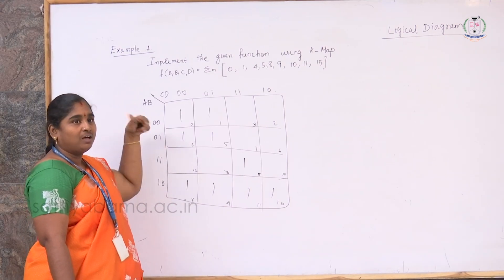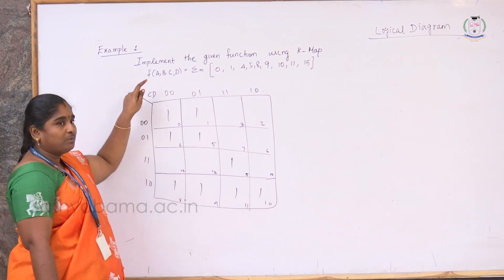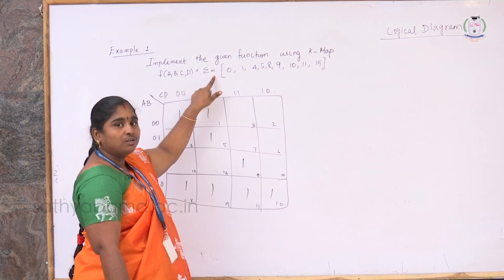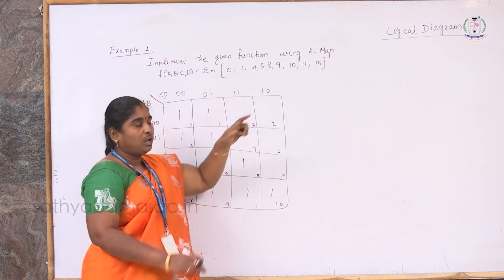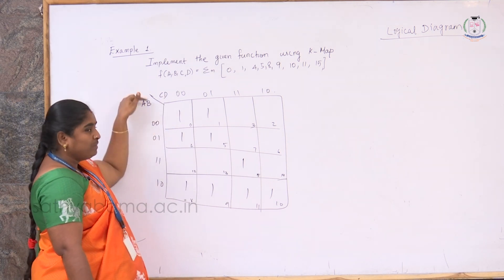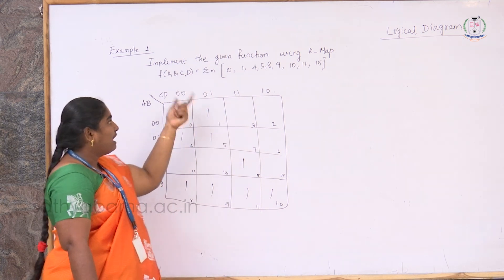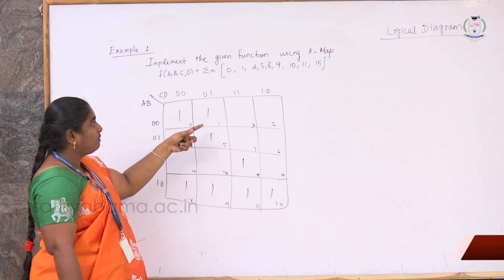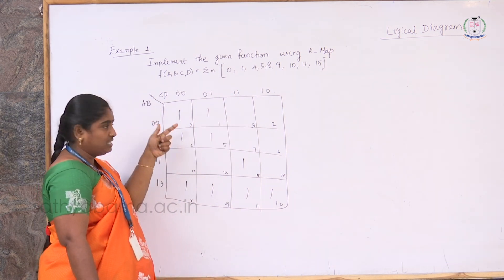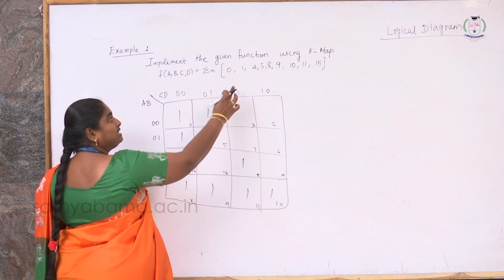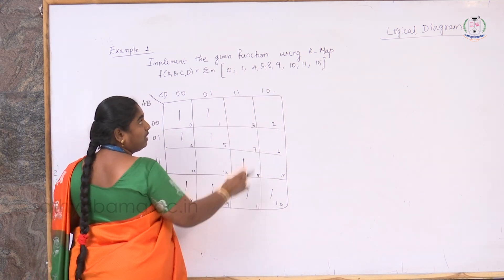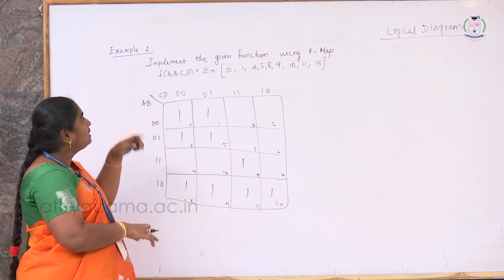Now let's see an example representing a given Boolean function for 4 variables. The function F(A, B, C, D) = Σm represents min terms inserted into the function. Since we have variables A, B, C, D, we use a 4-variable K-map with A and B in the vertical column and C and D in the horizontal row. Whatever terms are given in the function, all have to be represented as 1 in their respective positions. Min terms 0, 1, 4, 5, 8, 9, 10, 11, and 15 are placed as 1s in their corresponding cells.